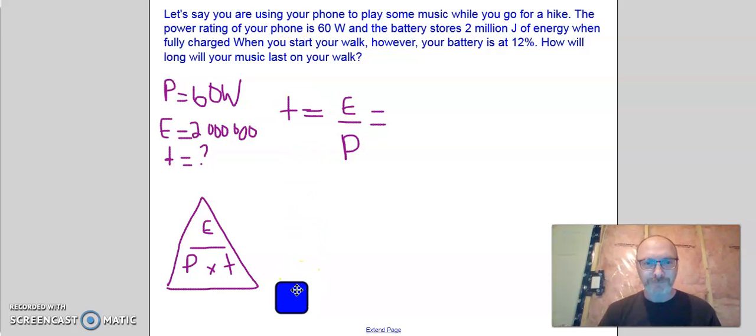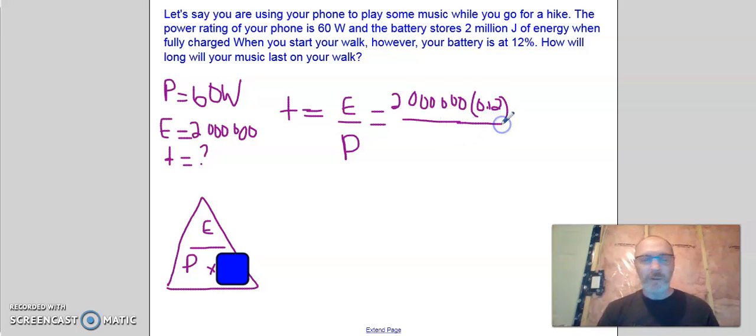Again, we're asked to find time. When using the triangle, cover up what you're trying to find and what's left over is E over P. And this is what we have written here. So our energy is going to be 2,000,000. But we're going to have to multiply that by 12%. So that's 0.12. So we're only using part of the battery energy. And divide that by 60.